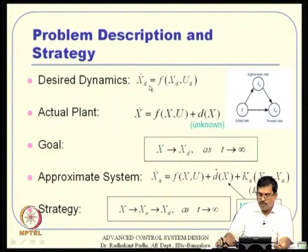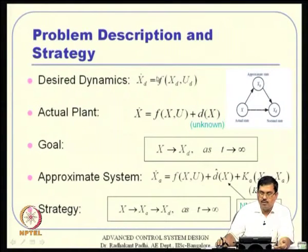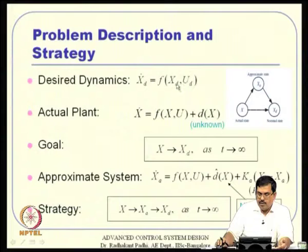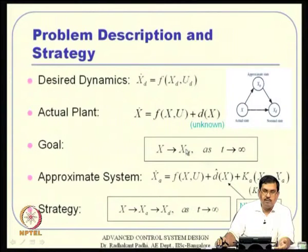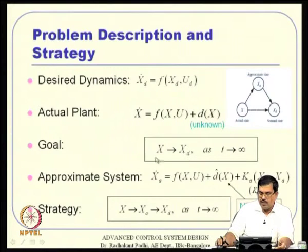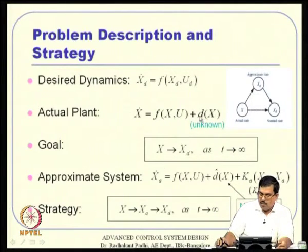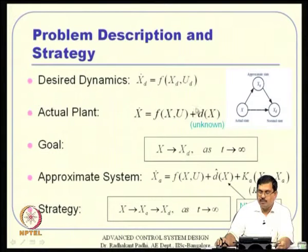We know the objective is met by x_d already, since we designed u_d to satisfy all necessary things. So x_d is a good reference to track, meaning x should go to x_d as soon as possible. The problem is that x-dot contains d(x) and we do not know that. So the idea is: can we approximate d(x) using a neural network or some function approximation tool? Because this approximation can never be exact, we denote the approximate system state as x_a.